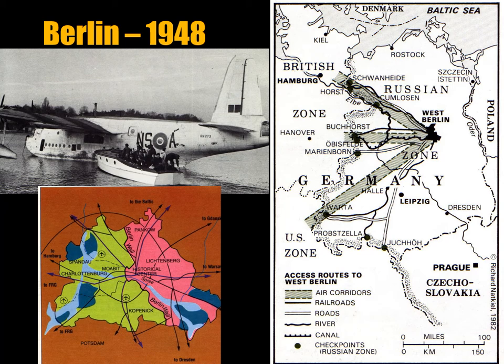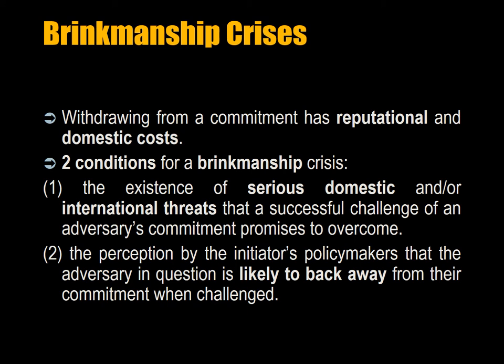Another example is the Berlin crisis of 1948. Stalin wanted to pressure the British, French, and Americans to give up control of West Berlin, so he had the Soviet army blockade road access to the city. The Allies, however, ensured supplies through a massive airlift, until eventually the Soviets backed down. Withdrawing from a commitment has reputational and domestic costs — these are called audience costs. There are two conditions for a brinkmanship crisis: first, the existence of serious domestic or international threats that a successful challenge of an adversary's commitment promises to overcome, which increases risk propensity; and second, the perception by the initiator's policymakers that the adversary is likely to back away from their commitment when challenged, which limits the extent of risk.